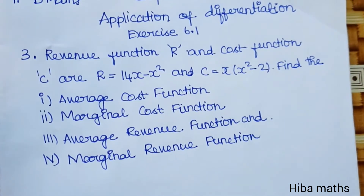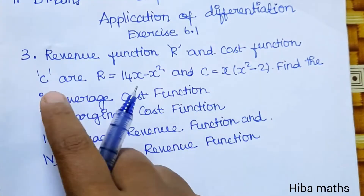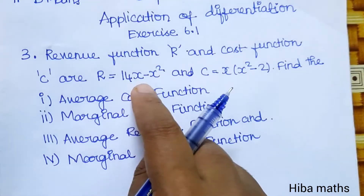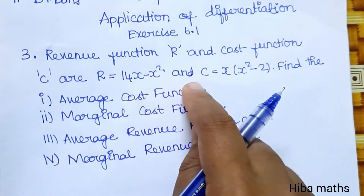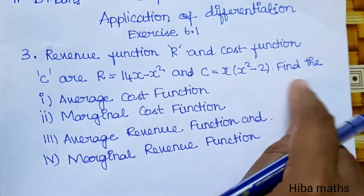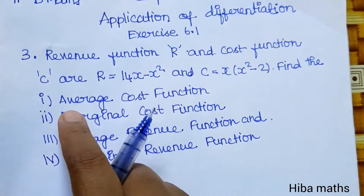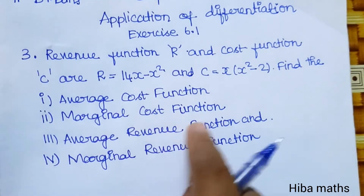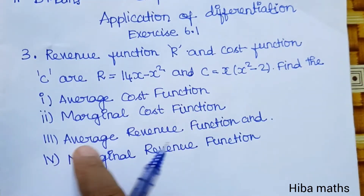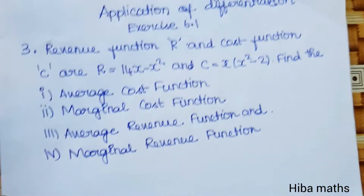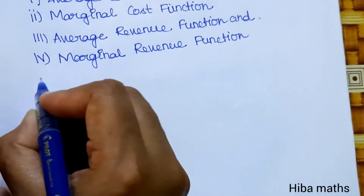Revenue function R and cost function C are given as R = 14x - x² and C = x(x² - 2). Find the average cost function, marginal cost function, average revenue function, and marginal revenue function. We will solve each question one by one.